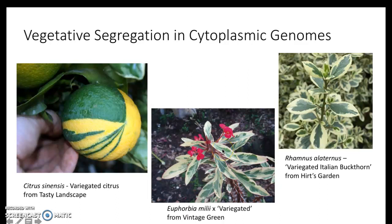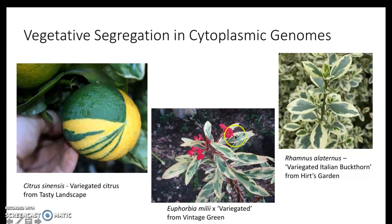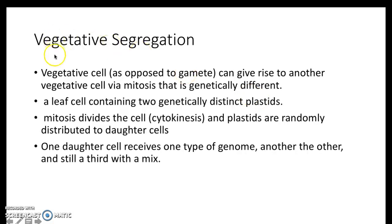It can happen from a mutation during the process of mitosis, but in the breeding process you can also try to select for that mutation to get more and more of this. So that's not just a single mutation on one or two leaves — you want to get it everywhere so it looks like uniform variegation. We're going to talk about how this can occur. Vegetative segregation is what it's called, and first you can take any vegetative cell — a leaf cell in this case, as we saw in these pictures.